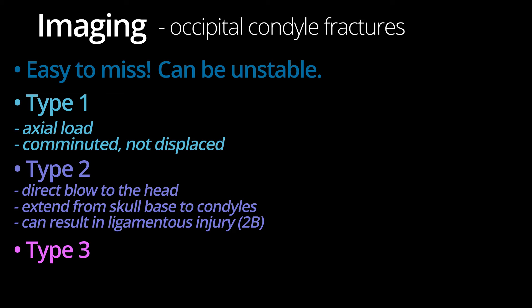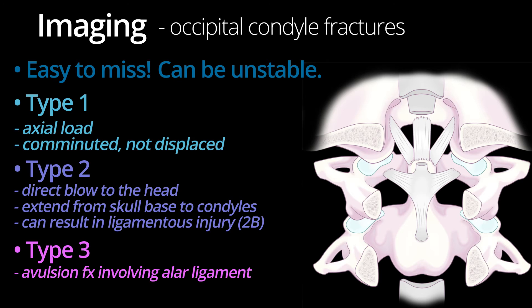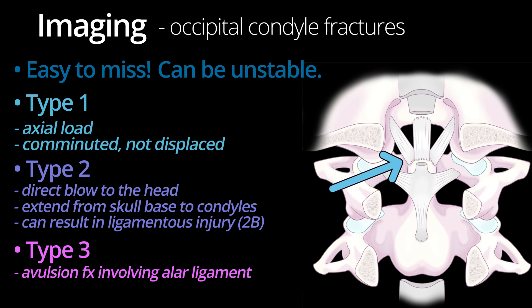Type 3 occipital condyle fractures are an avulsion-type injury involving the alar ligament. As reviewed earlier, the alar ligament attaches to the inferomedial aspect of the occipital condyles and extends to the posterior aspect of the dens. The alar ligament limits axial rotation and lateral bending. In a high-speed rear-end motor vehicle collision, the head often undergoes maximal rotation and whiplash by the impact, which makes the alar ligament vulnerable to injury.